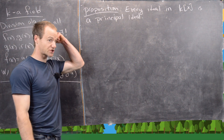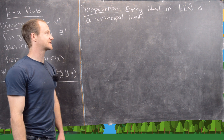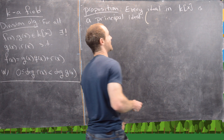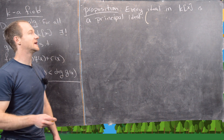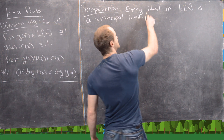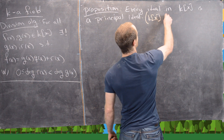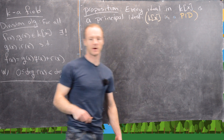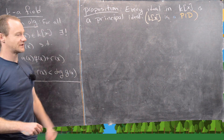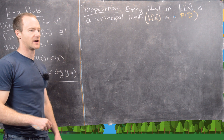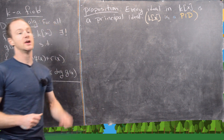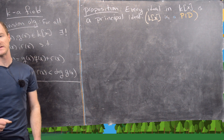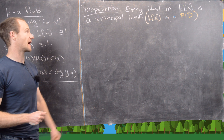The proposition we want to prove is essentially that K[x] is something called a principal ideal domain. In other words, every ideal in K[x] is a principal ideal. So K[x] is a PID. Coming up right after this on the channel, we're going to have a little section on unique factorization domains, fields of fractions, and principal ideal domains, so take a look for that.